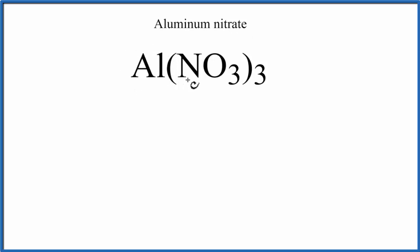Aluminum, that's a metal, and then N and O, those are non-metals, and they're actually bonded together in a polyatomic ion called the nitrate ion. We have three of these NO3s.